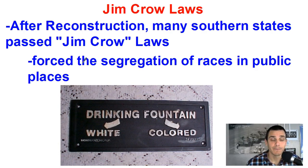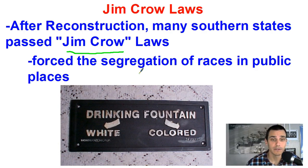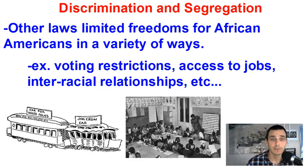After Reconstruction in the South, many states passed what was known as Jim Crow laws. This was the forced segregation of the races in public places — segregation means basically separation. You'll see this commonly with the drinking fountain situation, where white people had to drink from one fountain and black people from the other. This applied to schools, restaurants, businesses, and really many aspects of Southern life.